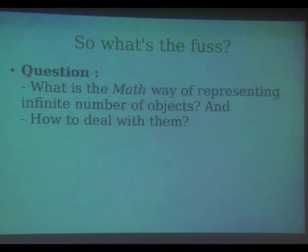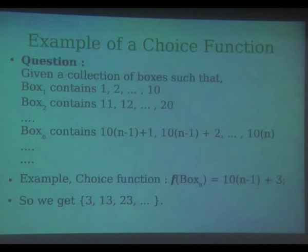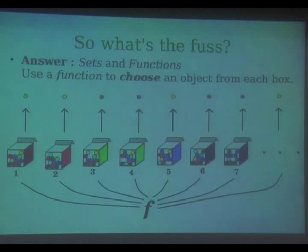What is the math way of representing infinite number of objects? Sets. And how do you deal with them is functions. A set is the way to deal with infinite objects and functions are to sort of operate on them. If I can define such a function f, which given a box will choose an element from that box — if I can construct such a choice function, then I can say that the axiom of choice is true, or that I can choose an element from each box.